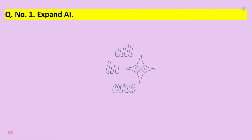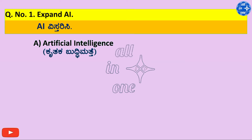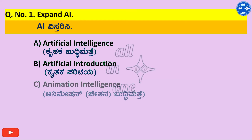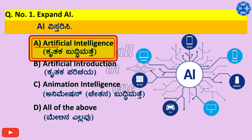Question No. 1. Expand A.I. Options: A. Artificial Intelligence, B. Artificial Introduction, C. Animation Intelligence, D. All of the above. Right answer is A. Artificial Intelligence.